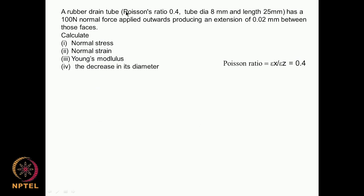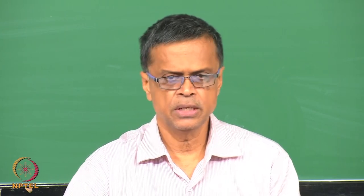Let us look at a problem. I have a rubber drain tube with a Poisson's ratio of about 0.4. The diameter of the tube is 8 mm and the length is 25 mm. A force of 100 Newton is applied to pull it, causing an extension of 0.02 mm. Calculate the normal stress, normal strain, Young's modulus, and the decrease in the diameter — because as I said, the Poisson's ratio gives you the ratio of changes in dimensions in two perpendicular directions.